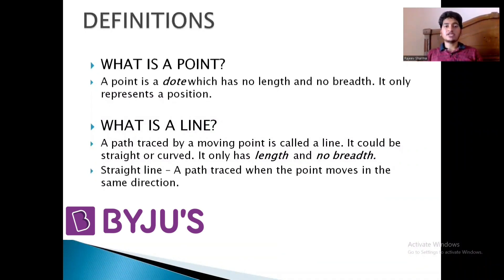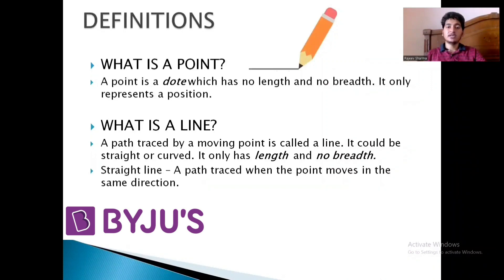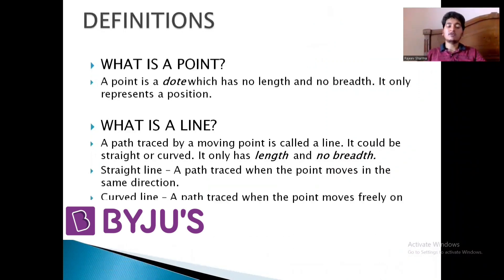How do we get a straight line? When the point moves in the same direction, we get a straight line. As you can see in the image, as the tip of the pencil is moved in the same direction, we get a straight line. A curved line is the path traced when the point moves freely on the surface — it need not move in the same direction — and as you can see in the image, that gives us a curved line.